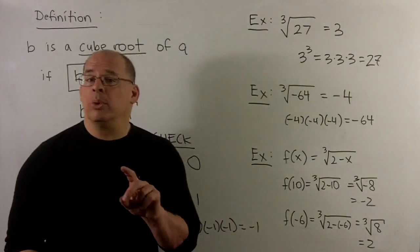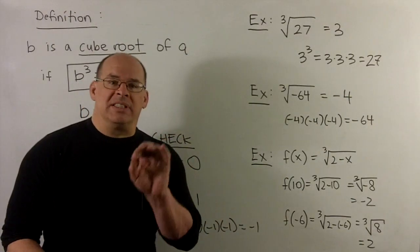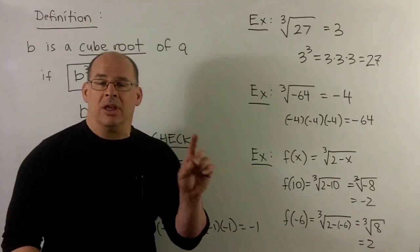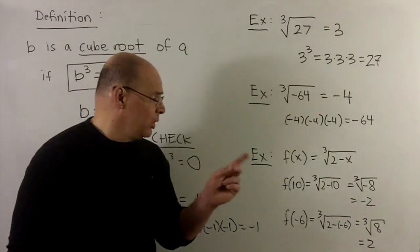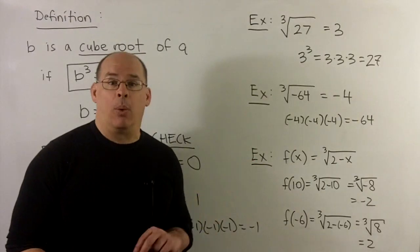So that's cube roots. For nth roots, it's the same idea. We could do 4th roots, 5th roots. Your exponent's just going to change to the n that you're using. So 4th roots, you're raising to power 4 and so on.